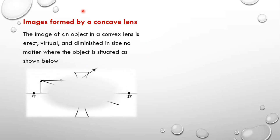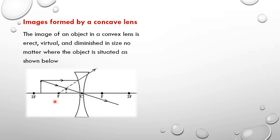Let us look at the ray diagram. When we place the object anywhere, a ray parallel to the principal axis is refracted and appears to be coming from the principal focus. The ray passing through the optical center goes undeviated, and therefore the image is formed between F and C. That image is going to be virtual, erect, and diminished.